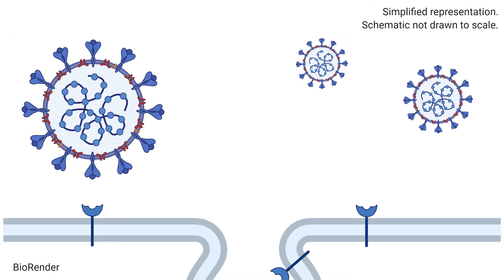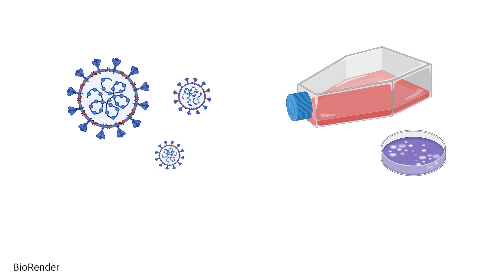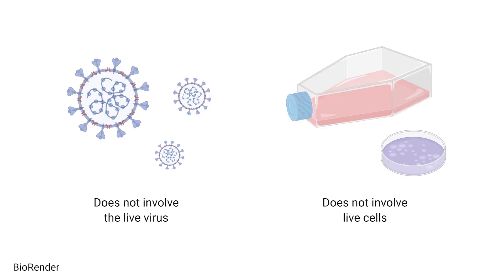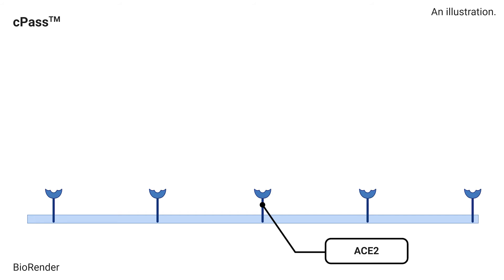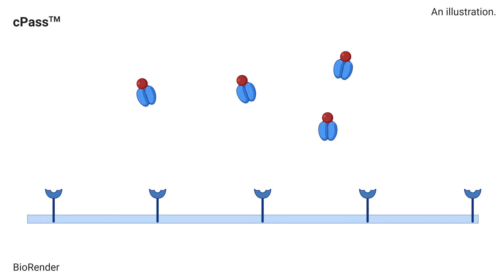CPAS works by copying the players of the SARS-CoV-2 infection without the use of the virus and human cells. In CPAS, human ACE2 protein is coated on the capture plate. We then add the RBD tagged with an enzyme horseradish peroxidase, HRP. This HRP-RBD protein causes a visible chemical reaction when the enzyme substrate, TMB, is added.